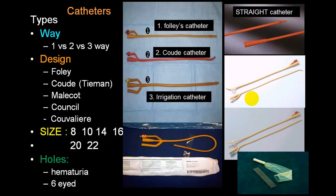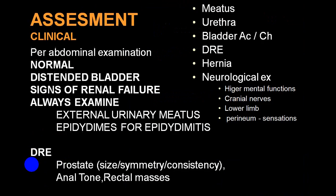Catheters can be single-way, two-way, or three-way. Types include Foley catheter, Coudé catheter (also called Tiemann catheter, with a slightly bent tip), Malecot catheter, Council catheter, and Ovular catheter. Size-wise, based on lumen size, they come in 8, 10, 14, 16, 20, and 22 French. Size 8 is used in children; sizes 20 and 22 are typically used in adult males.